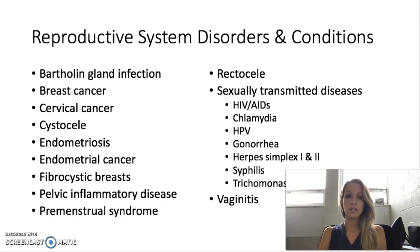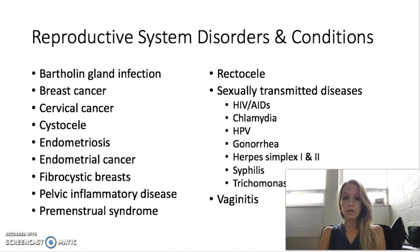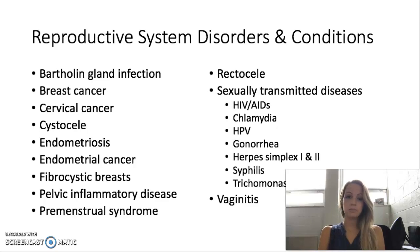The first is going to be a Bartholin gland infection. Sometimes you may hear these referred to as Bartholin cysts, and this is when there's an infection present within the mucous glands that open near the vagina. Sometimes these have to be lanced and drained, and sometimes you're just put on antibiotics to clear that up.